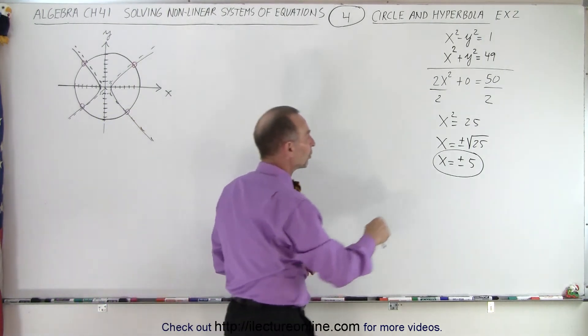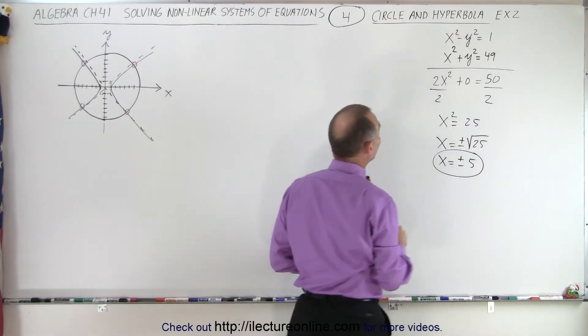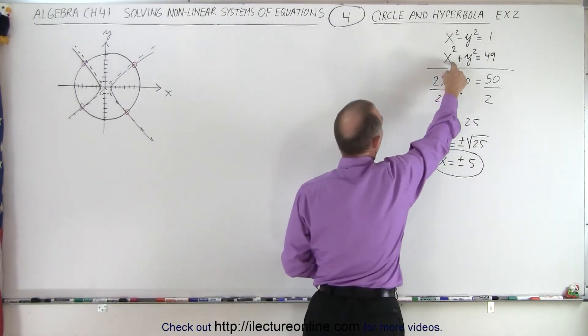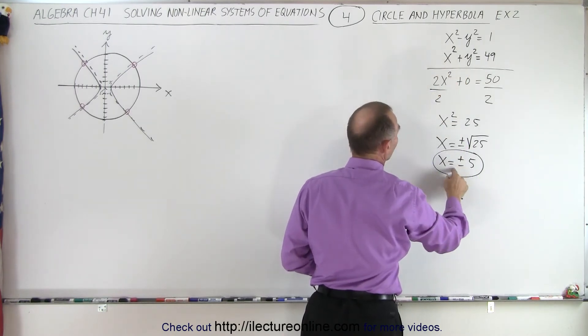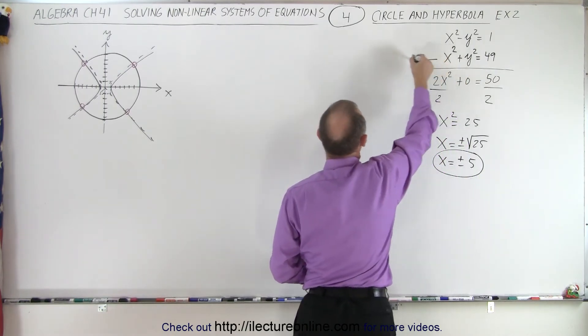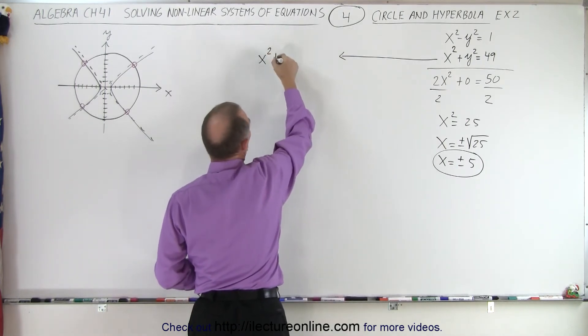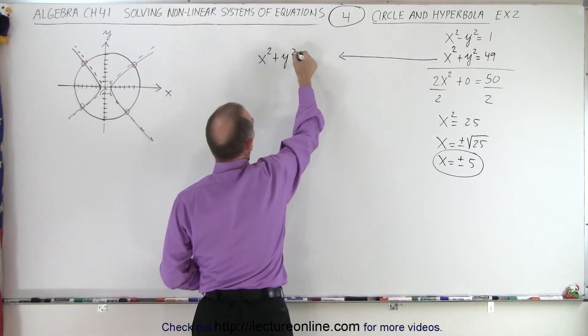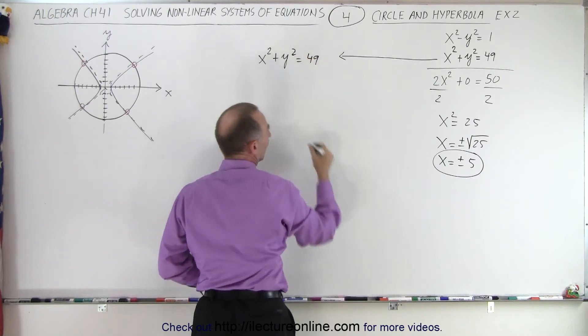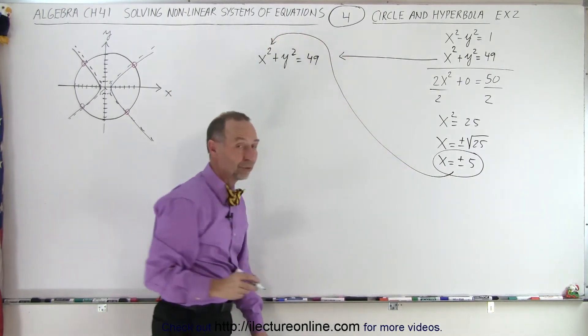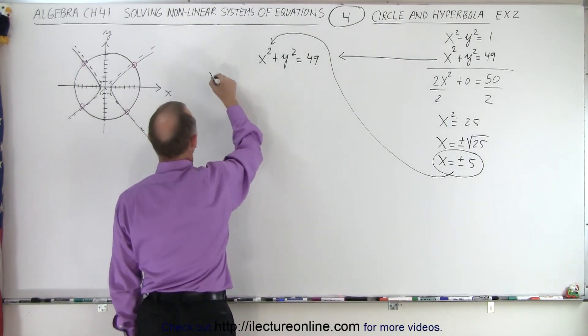Now what we're going to do is we're going to plug that into one of our two equations. It doesn't matter which one. So let's go ahead and grab this one right here and solve that for y. So we're going to take this equation. We're going to write x squared plus y squared is equal to 49. And now we're going to substitute both values for x one at a time. So first we'll try x equals plus 5.